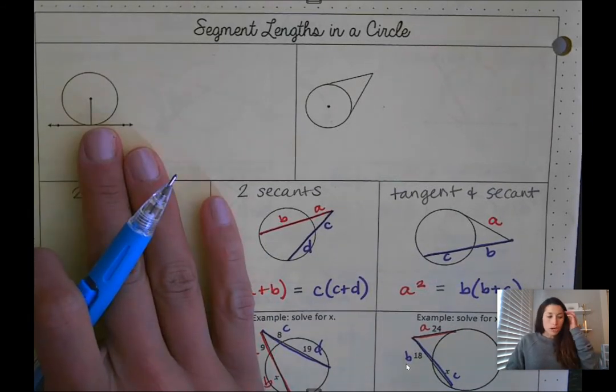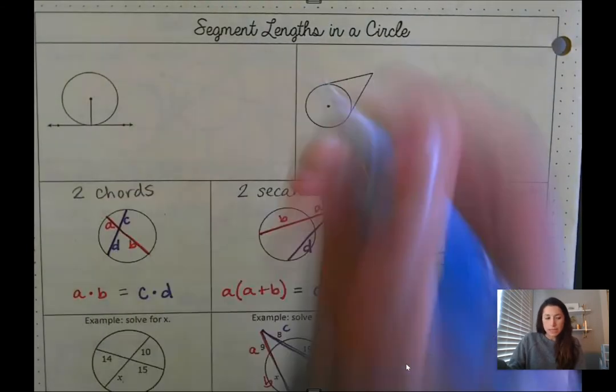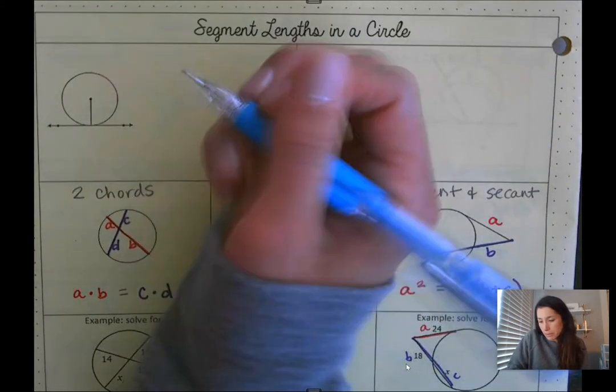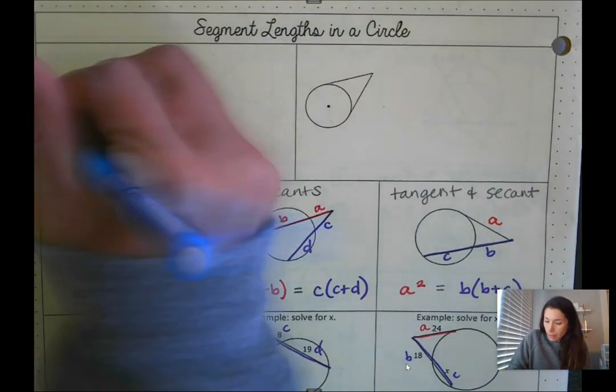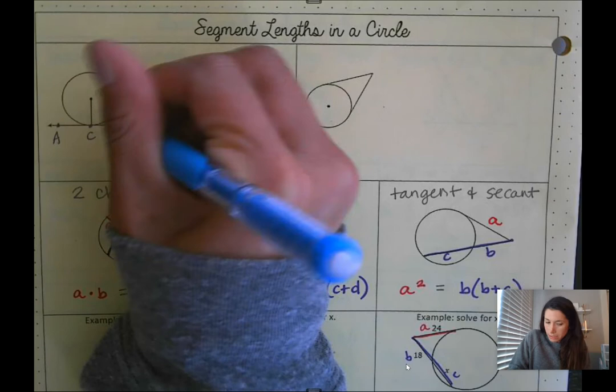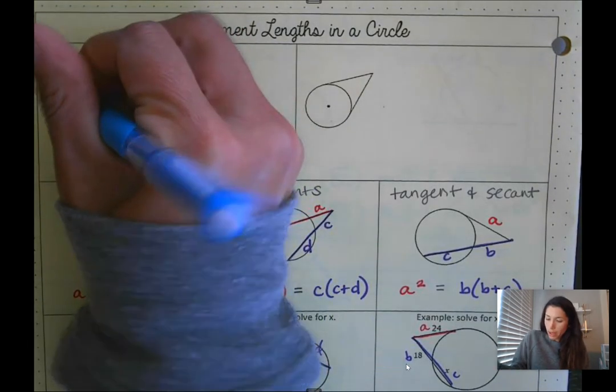In our first diagram here what we have is a tangent segment. That's this segment here. Let's label some of these pieces. I'm going to call this point here A, this point here C, and this point here B. And then the center of the circle let's call that D.